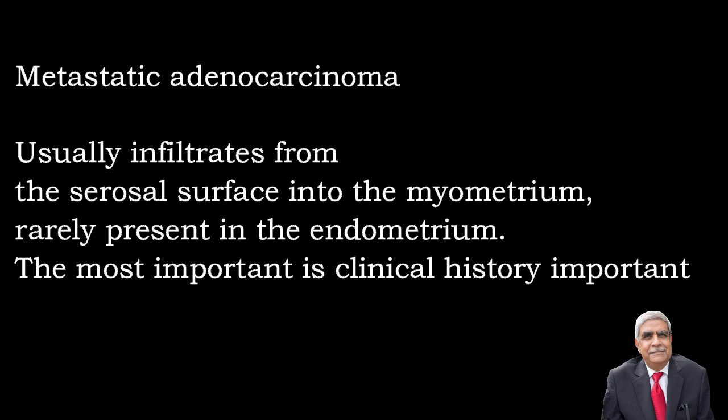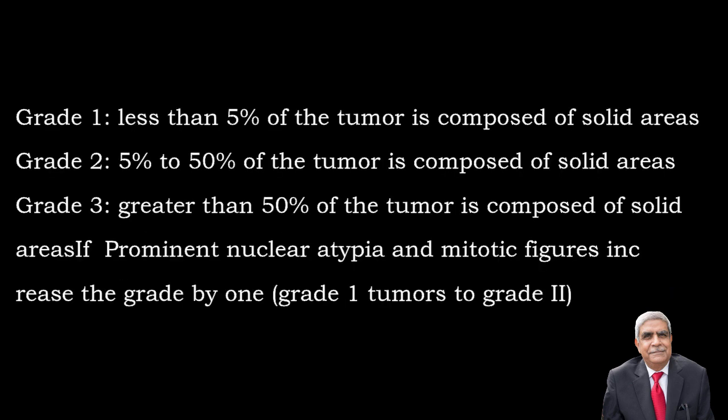In metastatic adenocarcinoma, metastases from nearby structures infiltrate the uterus from the serosal surface and rarely present in the endometrium. Clinical history and supportive lab findings are most important in this condition. Pathological staging: stage 1 is carcinoma confined to the corpus uteri; stage 2 involves the corpus and cervix; stage 3 extends beyond the uterus but not outside the true pelvis; stage 4 extends outside the true pelvis or involves the mucosa of the bladder or rectum.